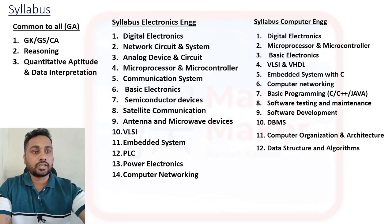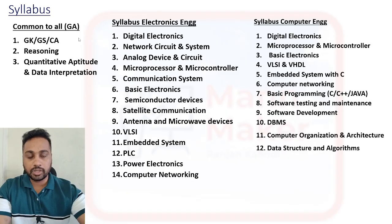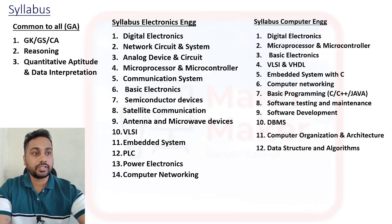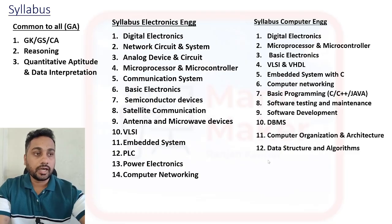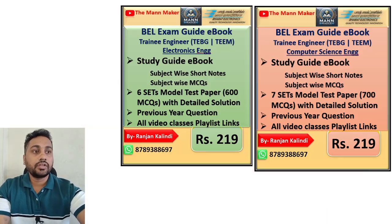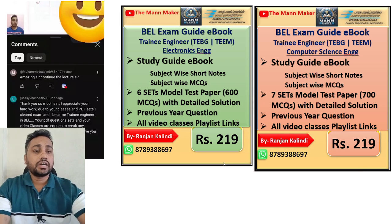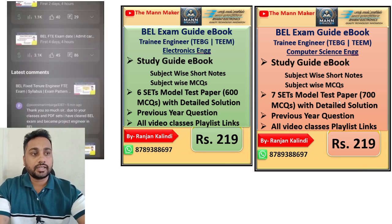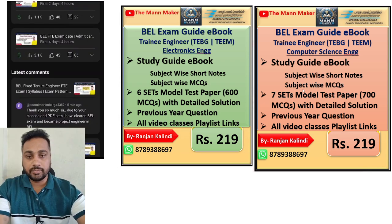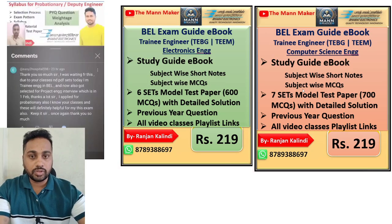Regarding the syllabus, for the non-tech section there is general aptitude, and for the technical section there is Computer Science. So there are two subjects in total. I already discussed all these things.